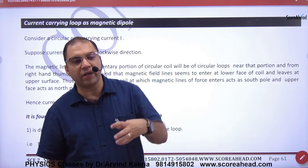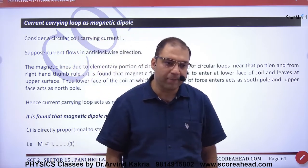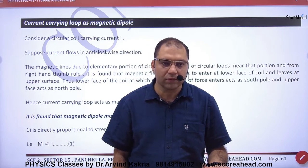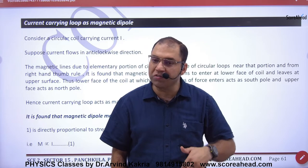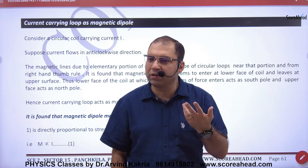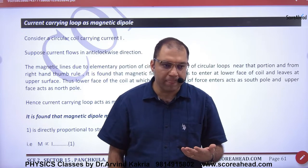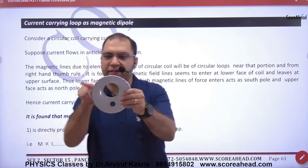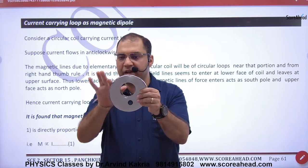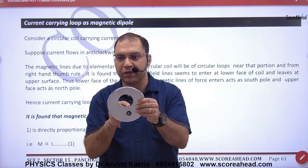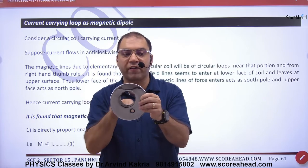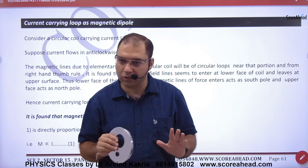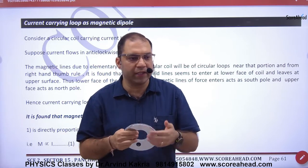If a current-carrying loop is a magnet, then it will have poles. Since it is like a magnet, we must identify north and south poles. We have to make imaginary poles because it has B generated. If the current is clockwise, that end acts like a south pole. If the current is anticlockwise, you look at that end and it is north. So one way the pole is south, the other way the pole is north.